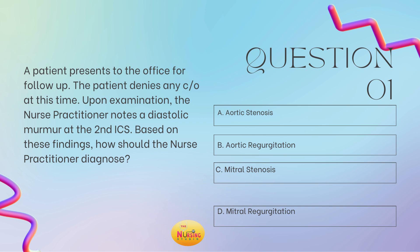I always recommend reading the stem of the question first — it allows you to slow down to make sure you're answering what is being asked of you. So here the stem states: based on these findings, how should the nurse practitioner diagnose? When you sit down to that test, if it's asking you to diagnose, I want you to run it back and see what the assessment findings are. If it's asking you to treat, you run it back. You know the steps, you know the drill.